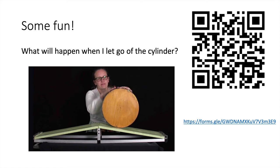We started this lecture with a fun demo asking what would happen to a cylinder. Most people thought it would roll down the slope, which is usually correct, but this was a special cylinder with an unbalanced mass. When released, it actually rolled up the slope — it had higher mass at the top, so the centre of mass moved down, pushing the cylinder up.